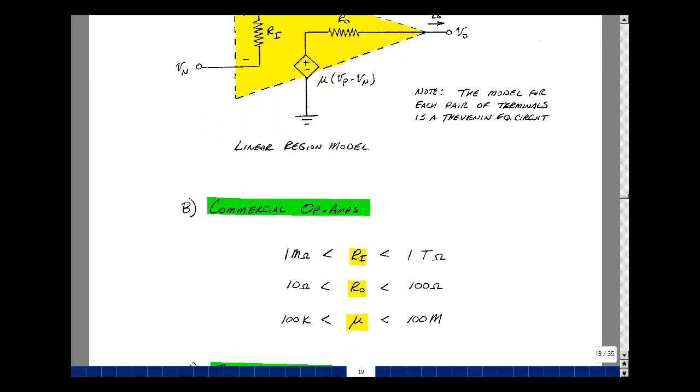In commercial op-amps, the value of R sub i here is very large, in many cases between 1 million and 1 tera-ohms, in other words, 10 to the 6th and 10 to the 12th ohms. The output resistance here is actually quite low, somewhere between 10 ohms and 100 ohms for many commercial op-amps. And lastly, this scale factor mu is sometimes between 100k and 100 million.